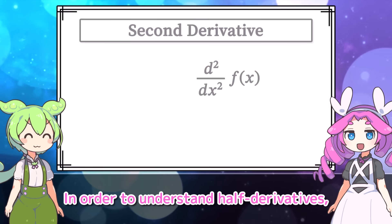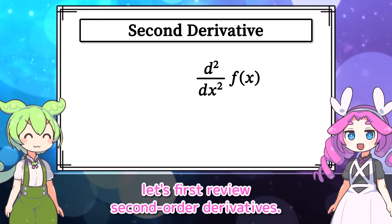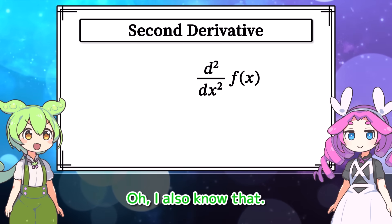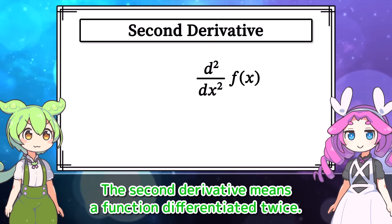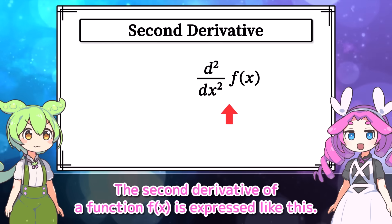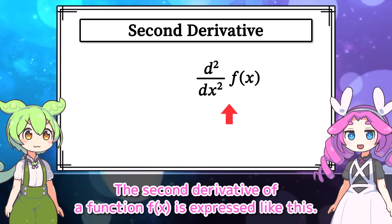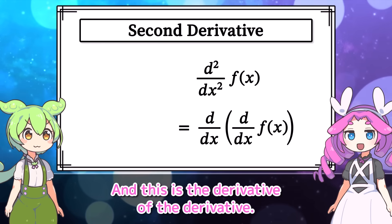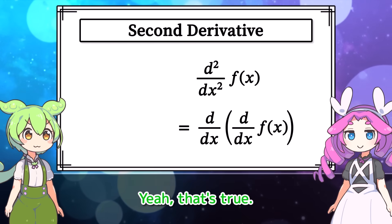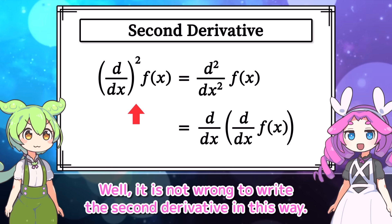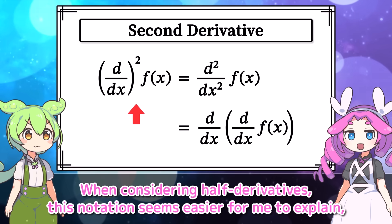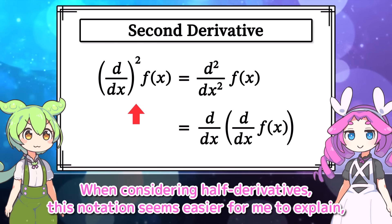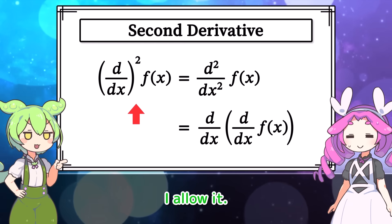In order to understand half derivatives, let's first review second-order derivatives. I also know that — the second derivative means a function differentiated twice. The second derivative of a function f(x) is expressed like this, and this is the derivative of the derivative. It is not wrong to write the second derivative in this way, though it is a slightly minor notation. When considering half derivatives, this notation seems easier to explain, so I will use it this time.